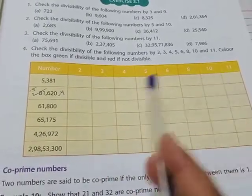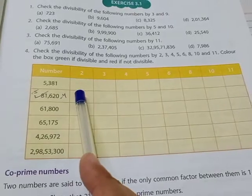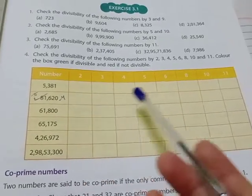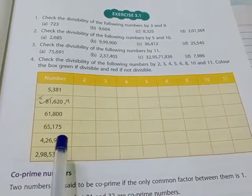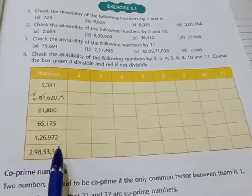And if it is not divisible, then you will color the box with red color. Like that, okay? I'll tell you for one, then rest all the boxes you color on your own. Okay, what is the rule for two? Divisibility rule for two...